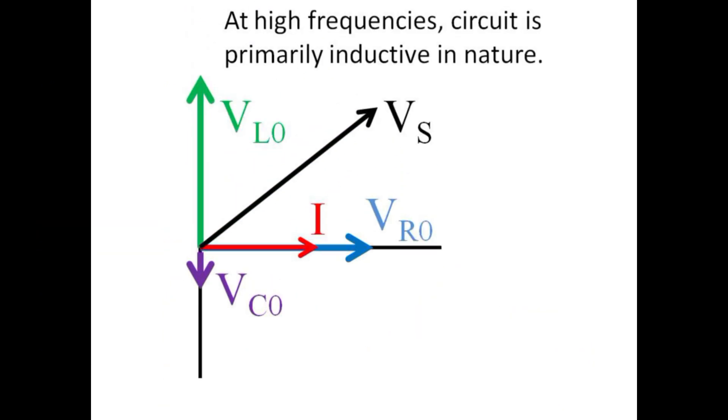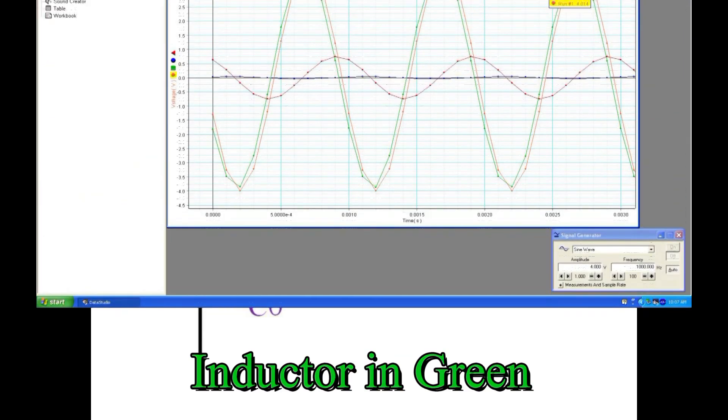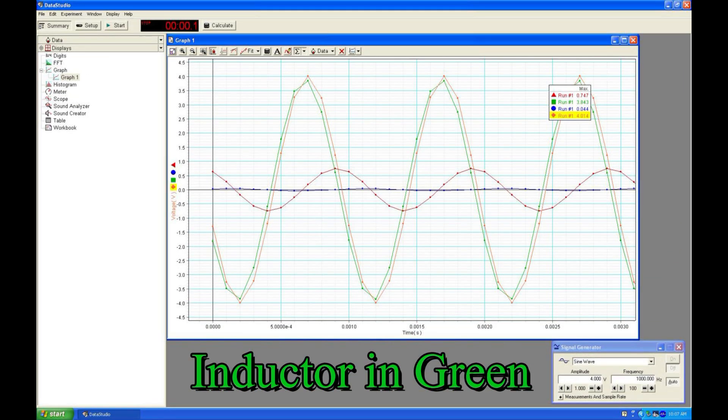At high frequencies, the inductive reactance is large, and we expect the inductor voltage drop to dominate the circuit. At 1,000 hertz, the green inductor voltage is seen to dwarf the resistor and capacitor voltages and be comparable to the source voltage.